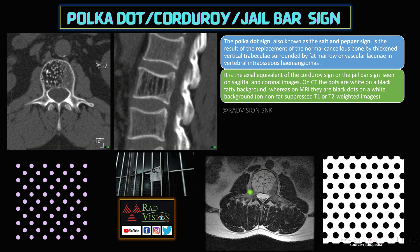On MRI, you can see the hyperintense fatty marrow and multiple prominent vertebral trabeculae depicted by hyperintense lines. This is the intraosseous hemangioma appearance on MRI. Remember: polka dot sign, corduroy sign, or jail bar sign in case of vertebral intraosseous hemangiomas.